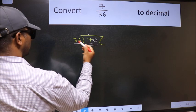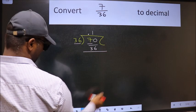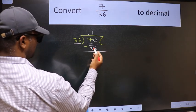A number close to 70 in 36 table is 36 times 1, 36. Now we should subtract. We get 34.